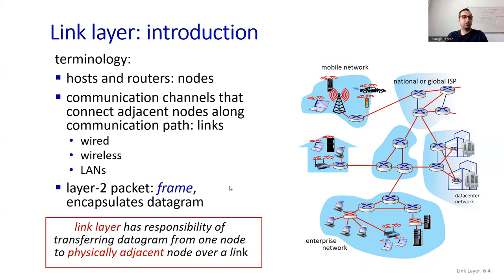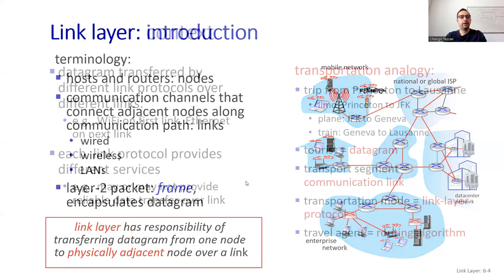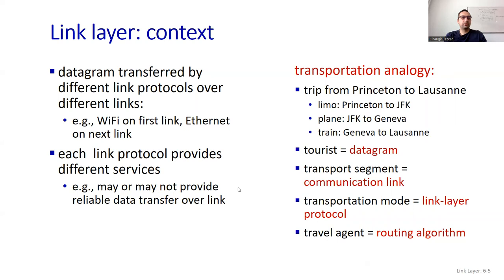Layer two packets are called frames. We talk about encapsulation — in the layer above we had datagrams, now we have frames. A datagram is transferred by different link protocols over different links. For example, Wi-Fi on the first link, Ethernet on the next link. Each link protocol provides different services — for example, it may or may not provide reliable data transfer over the link.